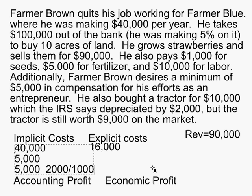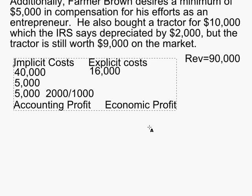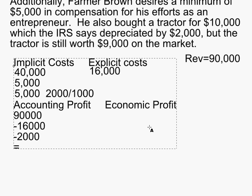Now we calculate what an accountant would say the profit would be. An accountant takes total revenue of ninety thousand and subtracts explicit costs. Accountants don't count implicit costs for the most part, except for depreciation. So they take ninety thousand, subtract the sixteen thousand in explicit costs, then subtract the two thousand in accounting depreciation. The accountant's version of profit is ninety thousand minus eighteen thousand, which equals seventy-two thousand dollars.